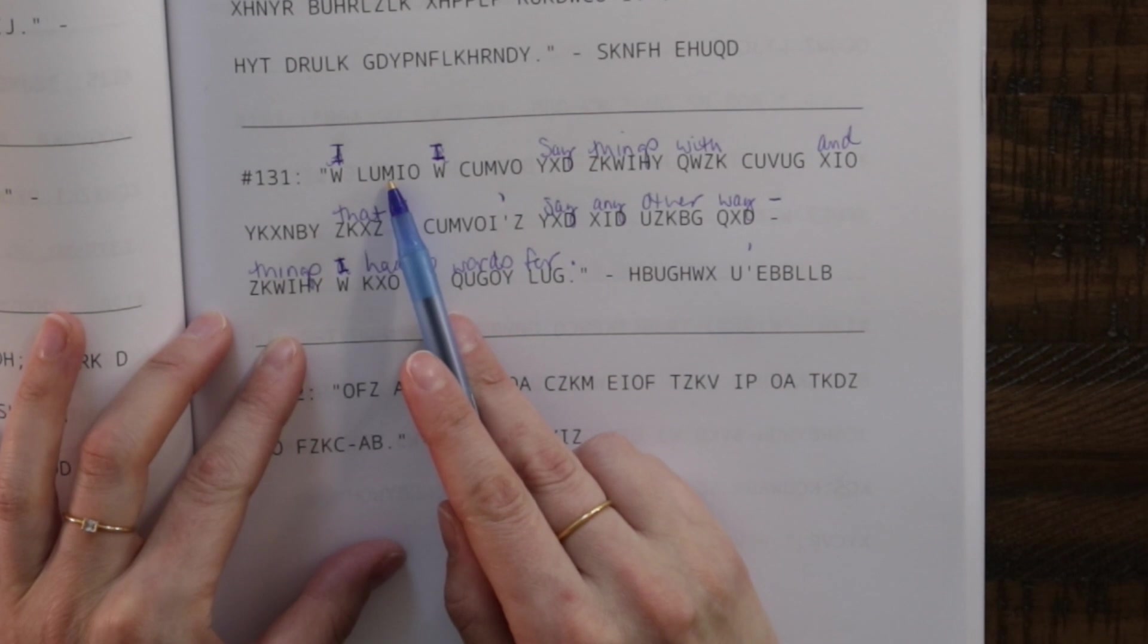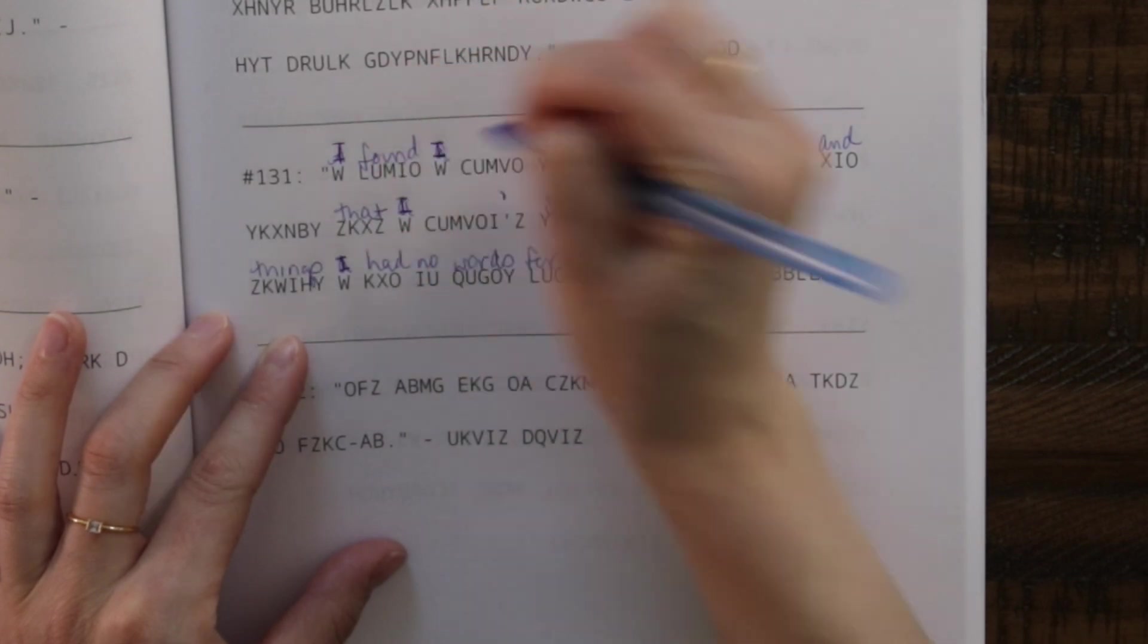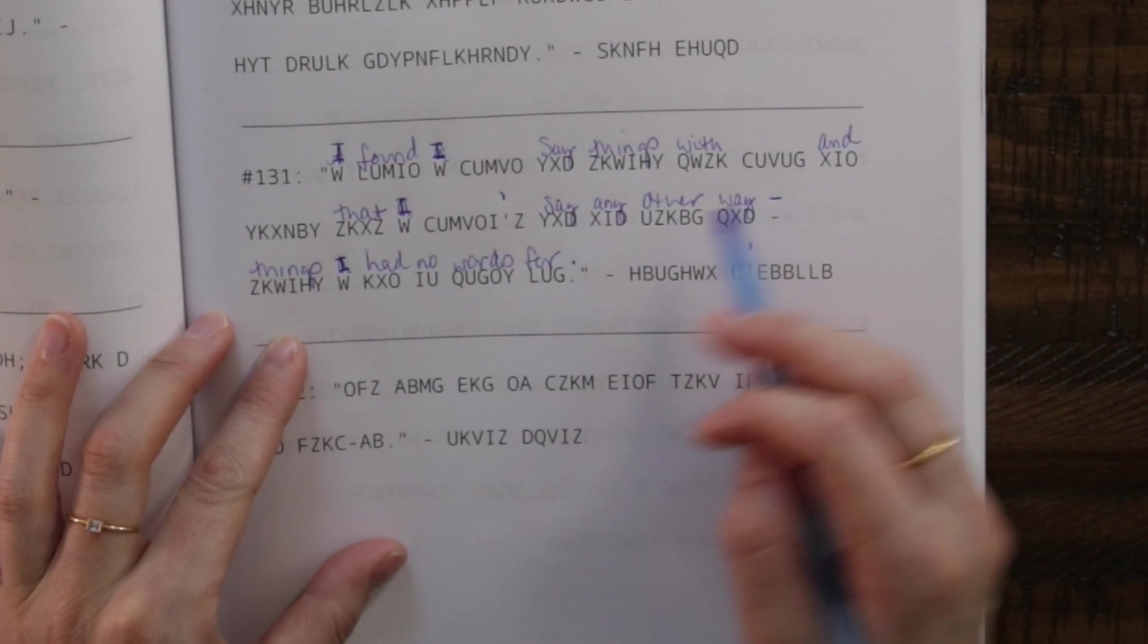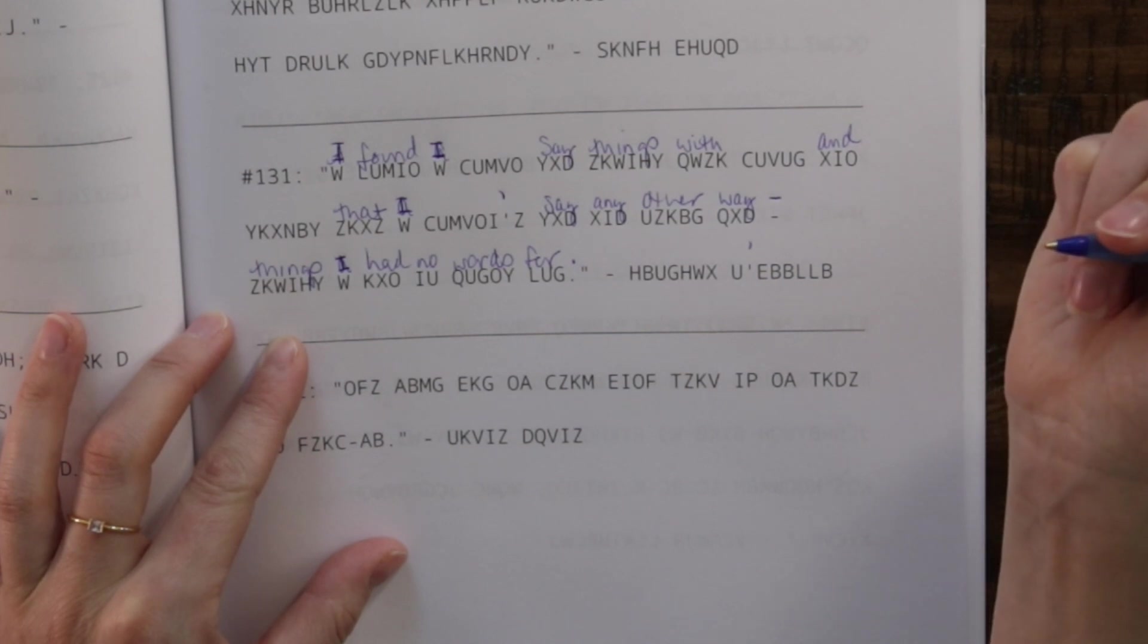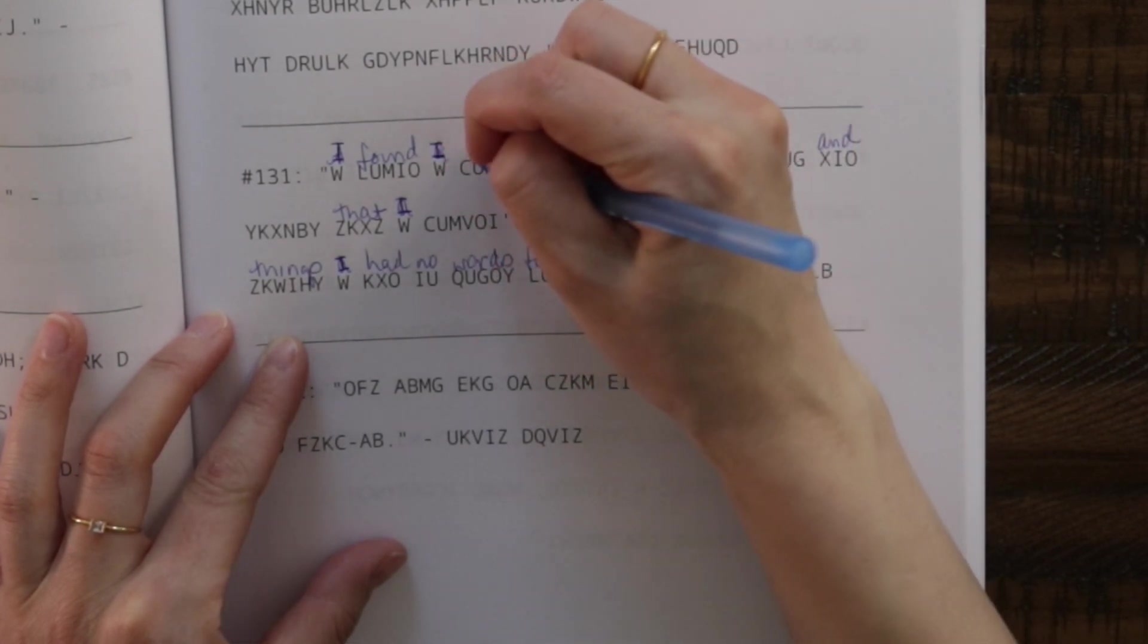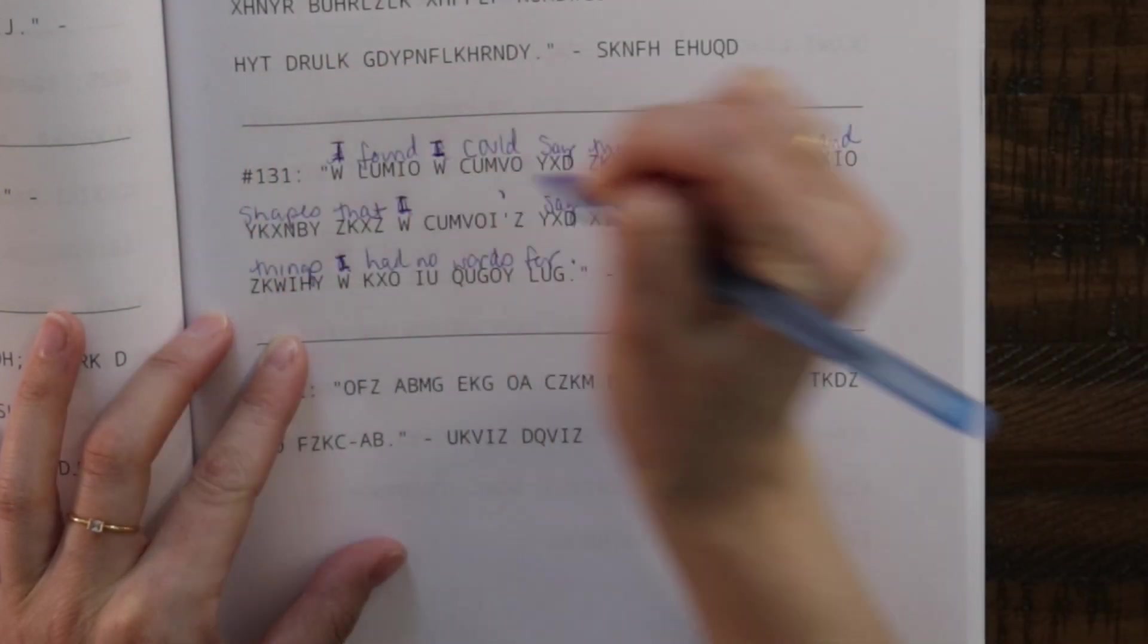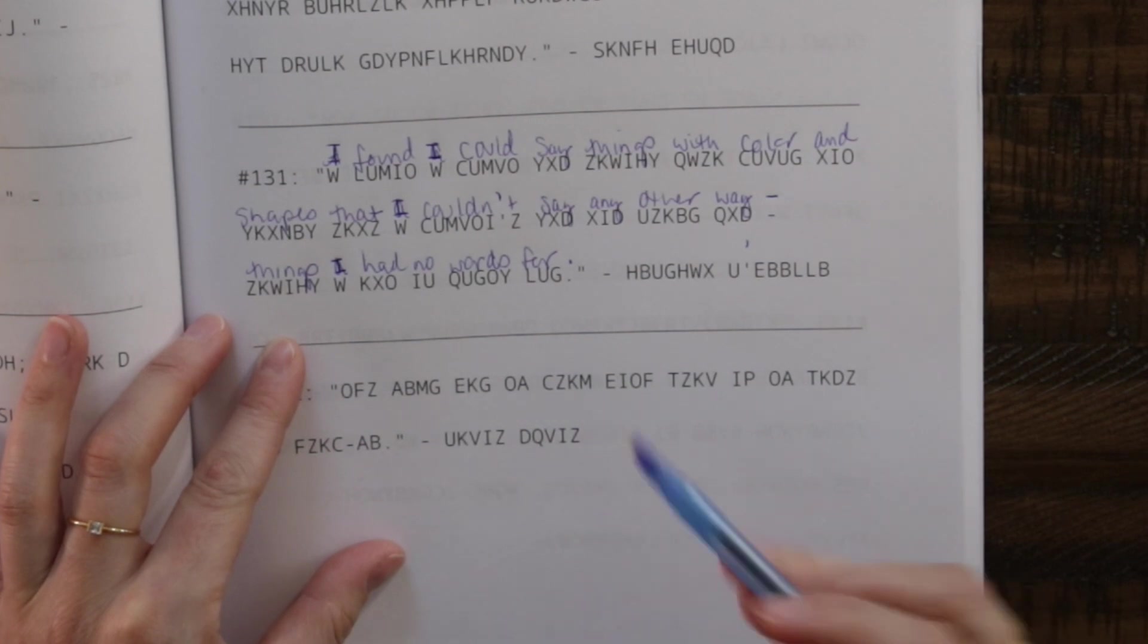We have the F here. So F, O. I found. Let's say found. F-O-U-N-D. Great. I think it is good. I think C means C. So this will be color. Color, yeah, the R. Color and something. Shapes. Oh, I like that. What about the B. What's the B. Do we have an E as B? Yes we do. All right. I think I found—I found I must be could, right? Color and shapes that I couldn't say any other way. Things I had no words for. Okay.